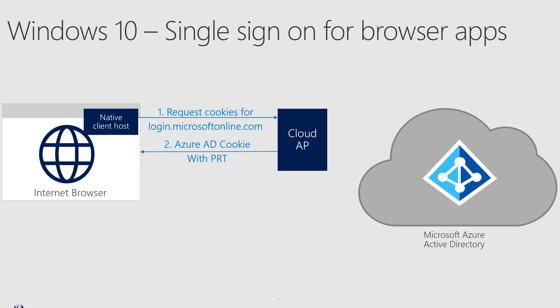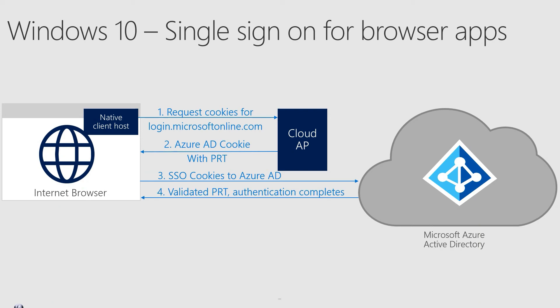Cloud AP will create this PRT cookie, again signed with the session key, which we mentioned earlier is the proof of possession key for Azure AD. Then it sends back the PRT cookie to the native client host, which in turn returns it back to the browser. The browser now includes this PRT cookie as part of the request to Azure AD to get a token for the user's application. Azure AD validates the PRT and the session key signature, and issues the session cookie for the application to sign the user in. The application then seamlessly signs the user in and the user can access their resources without needing to sign in again.